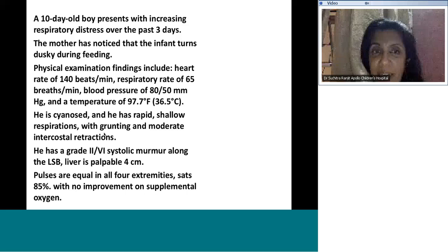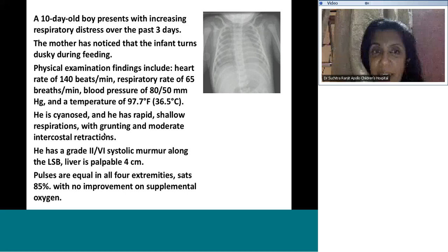A 10-day-old boy with increasing respiratory distress for three days is getting dusky during feeds. Heart rate is 140, breathing at 65, blood pressure normal, afebrile. He's in sinus with rapid shallow breathing, grunting and retractions. There's a grade 2 systolic murmur along the parasternal border and the liver is palpable. Pulses are equal in all four extremities but saturations are 85% with no improvement with oxygen. That's his chest X-ray.